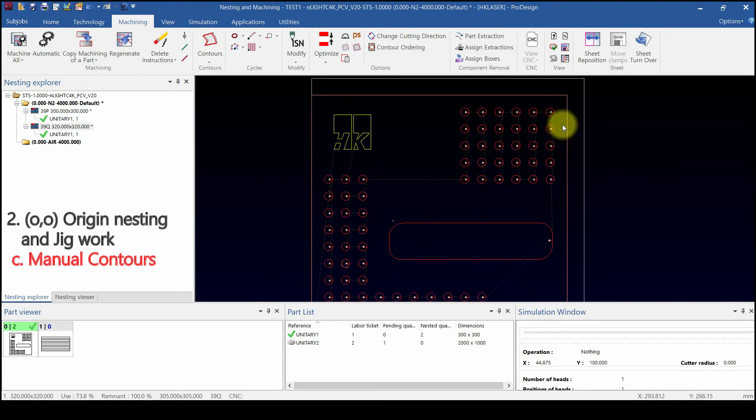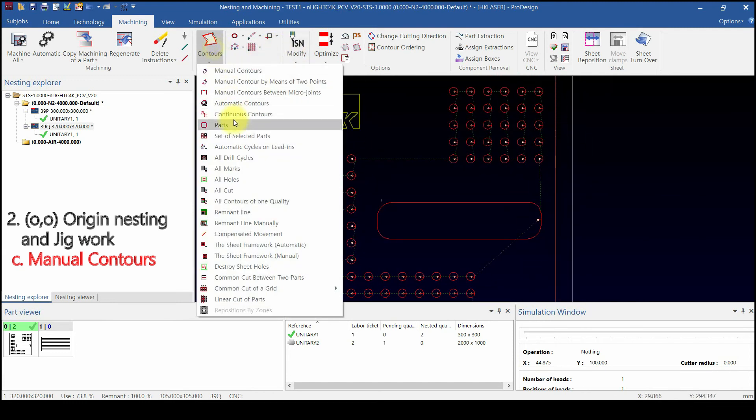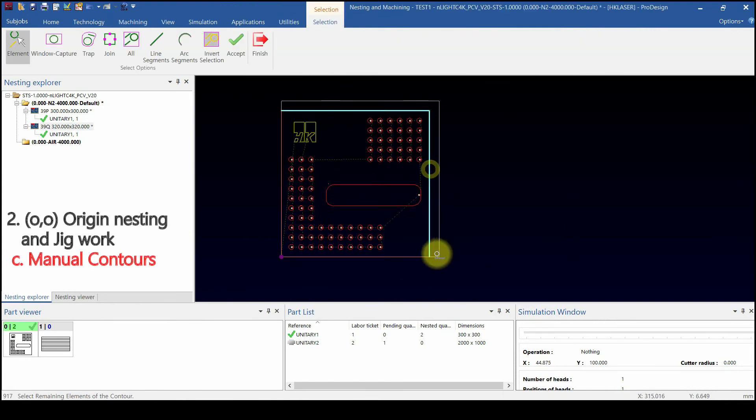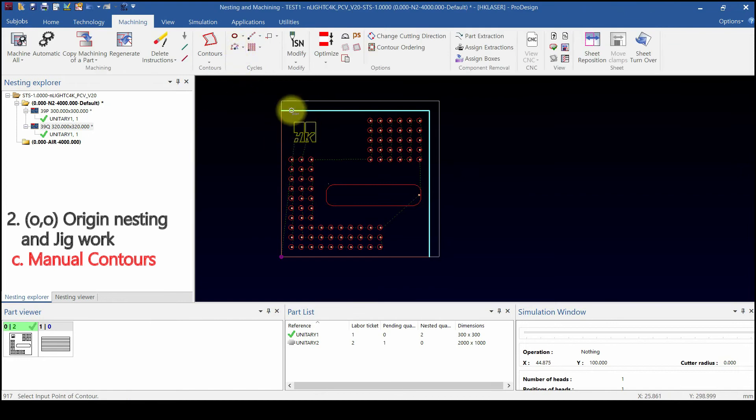Manual contours only make machining on selected line, so piercing mark may remain at the beginning. Select line to cut and click start and end point to apply.